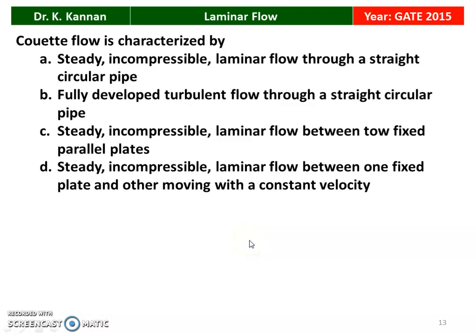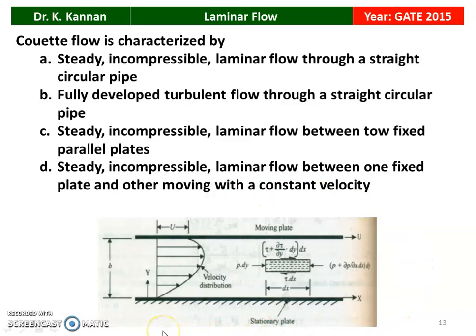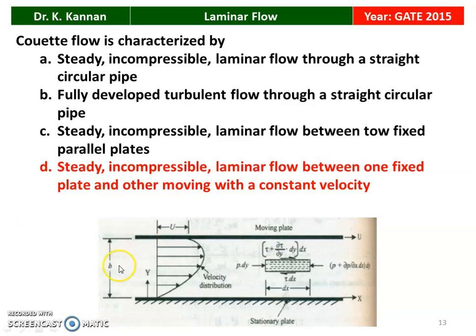Next question from the 2015 question paper: Couette flow is characterized by — options include laminar pipe flow, turbulent pipe flow, flow between two fixed parallel plates, or steady incompressible laminar flow between one fixed plate and one moving plate at constant velocity. As shown in the diagram, Couette flow has one stationary plate and one moving plate with velocity U. The correct option is D.